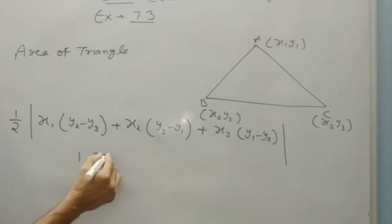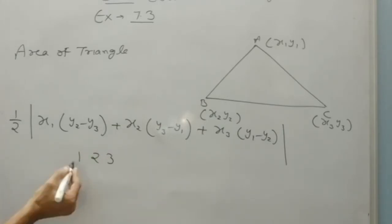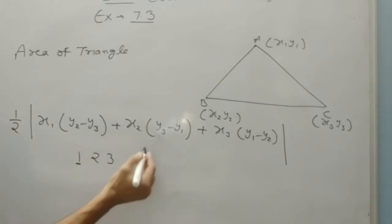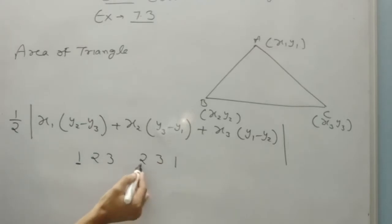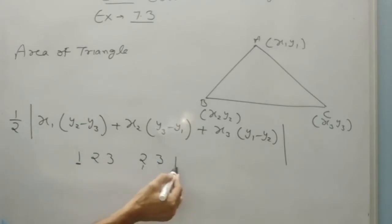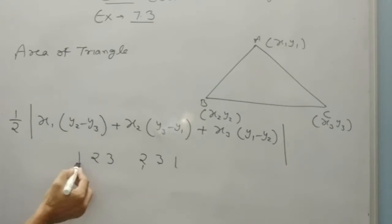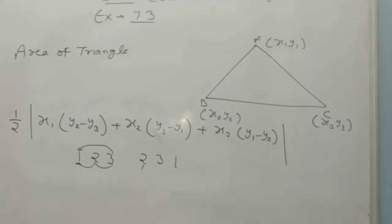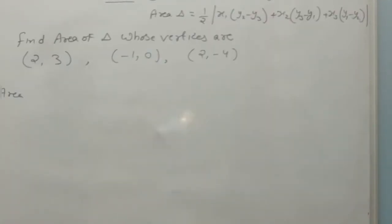The cycle is: when x is 1, then under y2 and y3; x2 then y3 and y1; x3 then y1 and y2. This system helps me solve questions easily. So let us start the exercise. Question number one: find the area of triangle whose vertices are (2,3), (-1, 0) and (2,-4).